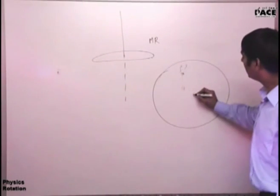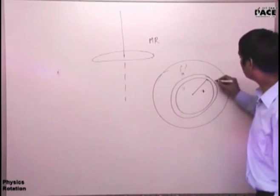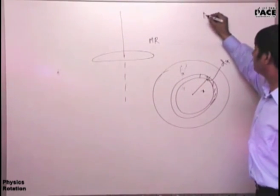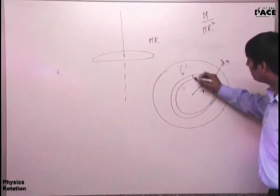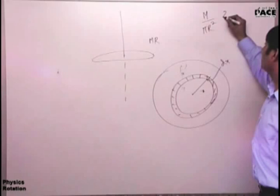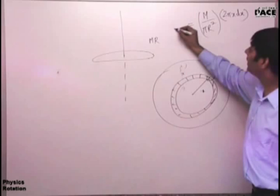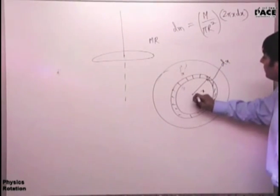This is a disk, top view. I go to a general distance x. Choose a strip like this. The thickness of the strip is dx. And mass per unit area is m over pi r squared. And area of this ring - how much? 2 pi x into dx. This is its area. Area into mass per unit area is the mass of the ring.